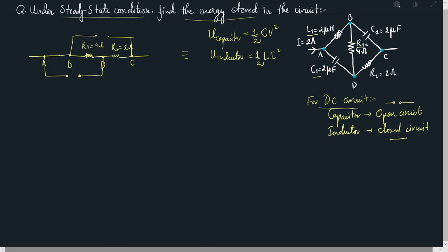To find the energy stored in the inductor, represented as U1, we use U1 = half times L times I squared, where the inductance L is 2 microhenry. Since the capacitors act as open circuits, current does not flow through them. The current flows straight through the resistors in series, so if the source current I is 2 amperes, the current through the inductor is also 2 amperes.